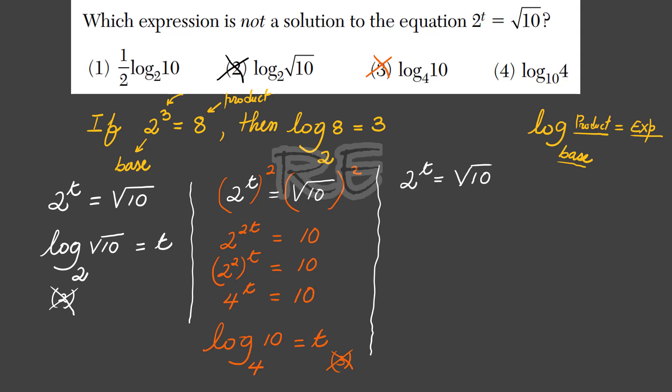2 to the t equals square root of 10 can be written as 2 to the t equals 10 to the 1 half. We'll write square root of 10 with fractional exponent.